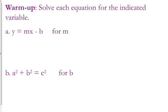So if we are solving that first equation for m, we need to start by adding b to both sides. So we have y plus b equals mx, and then we need to divide both sides by x. So we get that m equals y plus b divided by x.